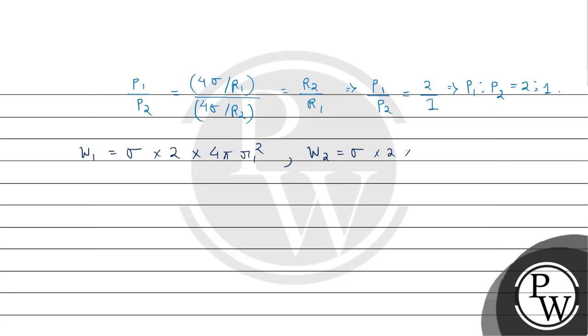Further solving the problem, we can write W1 divided by W2 equals to sigma multiplied by 2 multiplied by 4 pi R1 squared divided by sigma multiplied by 2 multiplied by 4 pi multiplied by R2 squared. Here sigma, 2, and 4 pi cancel out. So we get W1 divided by W2 equals to R1 squared divided by R2 squared, which equals 1 divided by 2 whole squared. So the ratio of work done is W1 divided by W2 equals to 1 divided by 4, or W1 is to W2 equals to 1 is to 4.